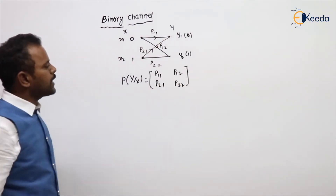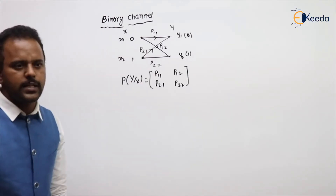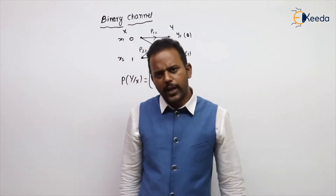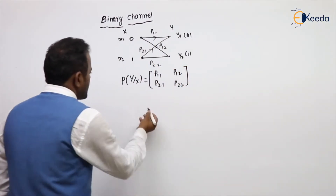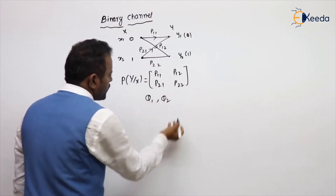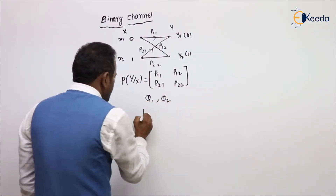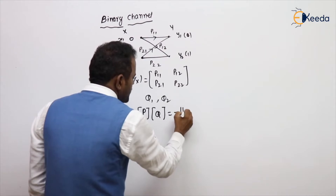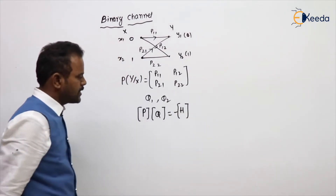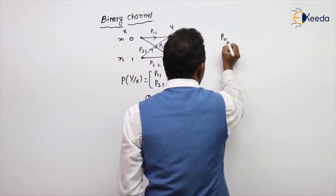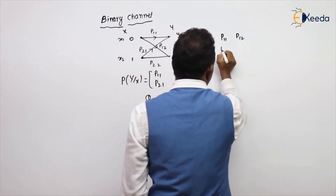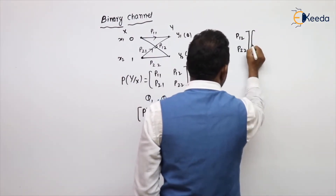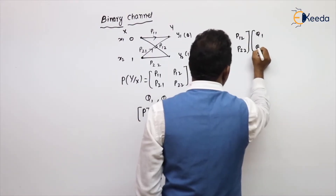To calculate the capacity of a binary channel, we introduce some auxiliary variables. Let's take auxiliary variables Q1 and Q2. We have the P·Q matrix equal to minus H of x. The P matrix is [P11, P12; P21, P22] multiplied by the Q matrix [Q1; Q2].